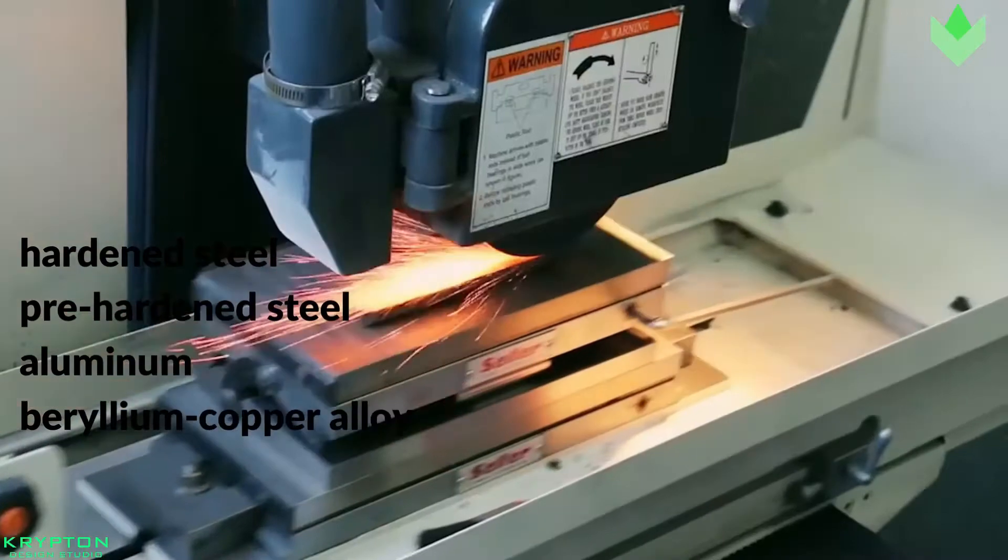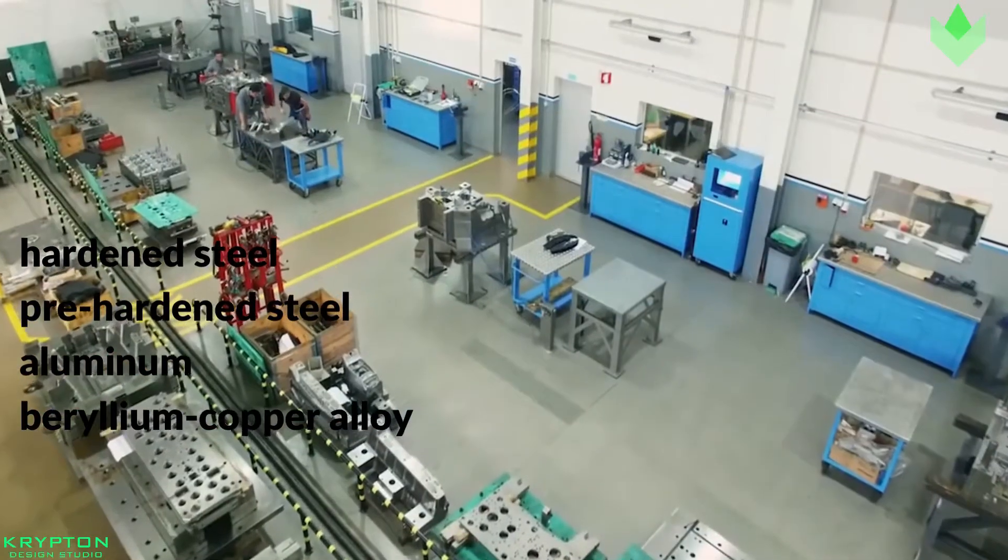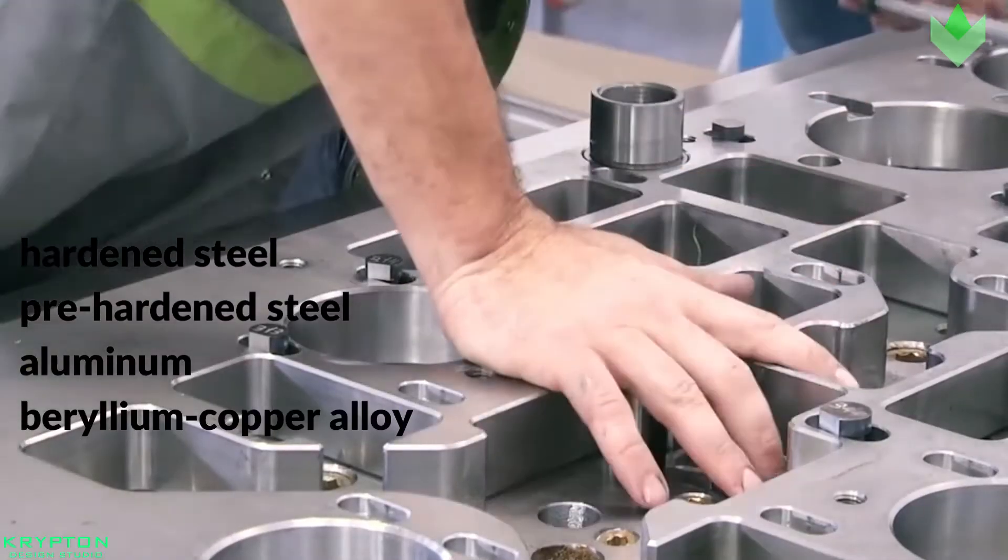Molds are typically constructed from hardened steel, pre-hardened steel, aluminum, and beryllium copper alloy.